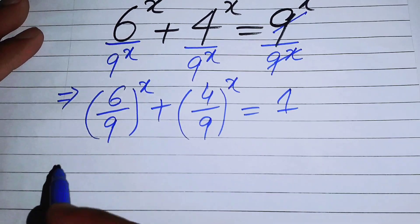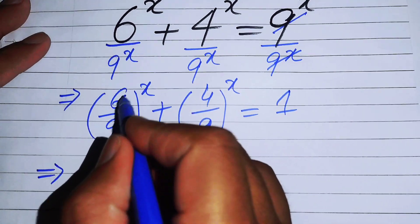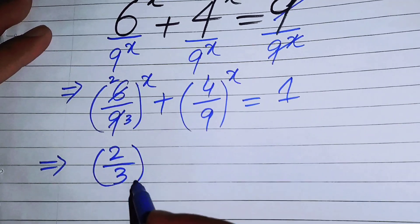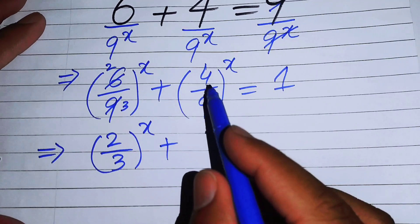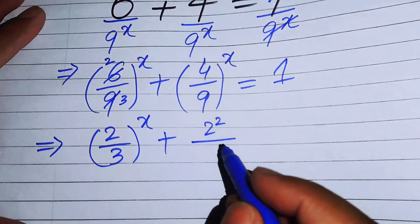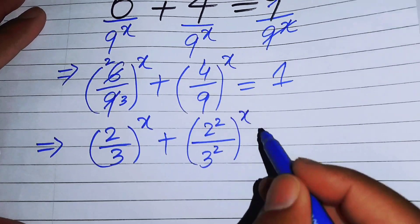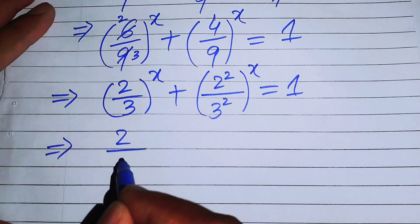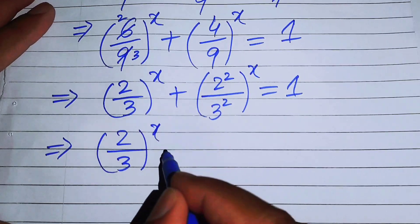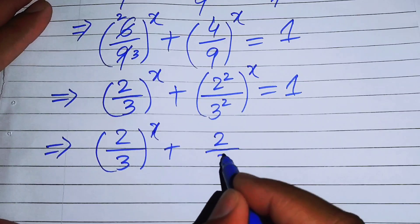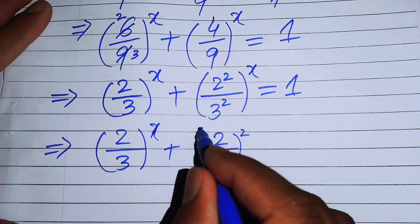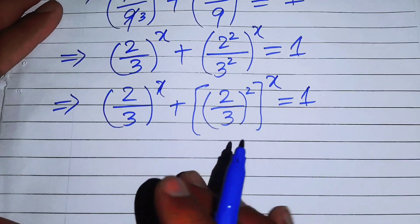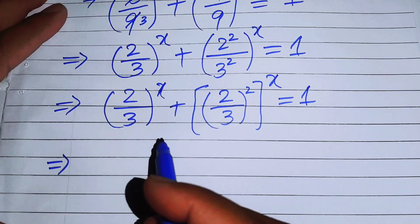After that we cancel out these terms: 3 twos are 6 and 3 threes are 9, so it becomes 2 over 3 to the power of x. We can write 4 as 2 squared and 9 as 3 squared with whole power x, which equals 1. Then we make the exponent of these two terms in the form (2/3) whole squared, to the power of x, equals 1.